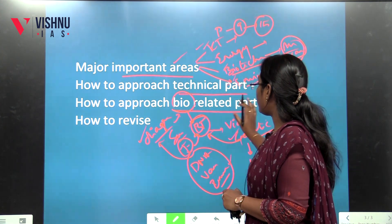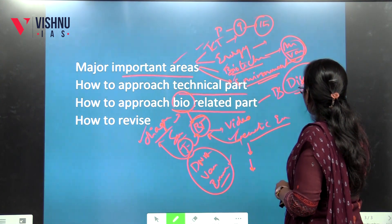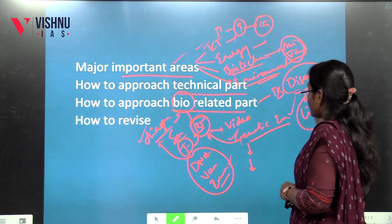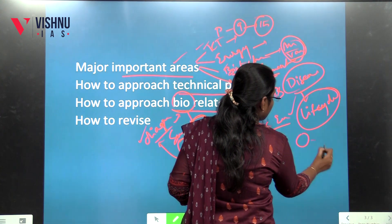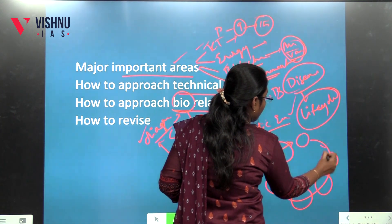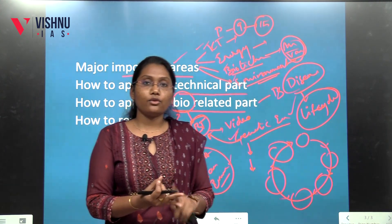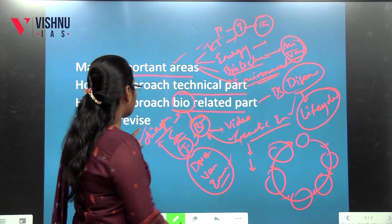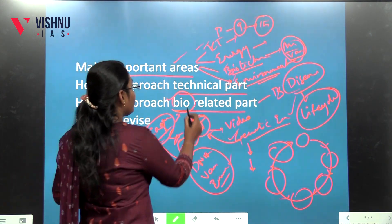This is how we can cover the bio-related part. For disease questions, the first thing is the microbe and its life cycle. For example, malaria — the life cycle, disease spread, different stages. Try to draw that disease spread or pandemic-related questions. Diagrams are very important, specifically in this bio-related part.